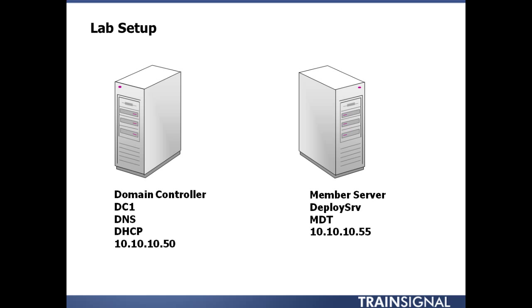The lab setup. What I have set up is all virtual machines, and even though this is a lab or test environment, you can set up your production environment with every single one of the machines in virtual environments. Over on the left-hand side, I've got a domain controller named DC1. He's also running DNS and I have a DHCP scope configured on him. He has a static IP address of 10.10.10.50. Over on the right-hand side, I have a member server to the Globomantics, Inc. domain. His name is DeployServe. It's running the Microsoft Deployment Toolkit, or MDT, version 2012 Update 1, with a static IP address of 10.10.10.55.